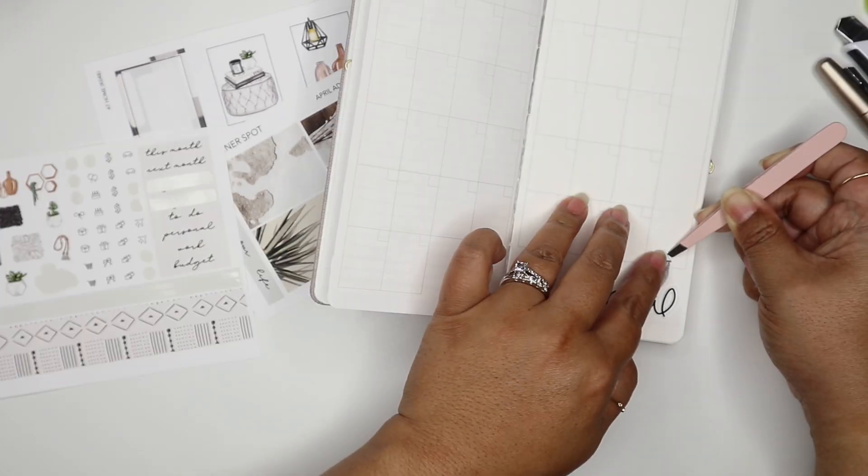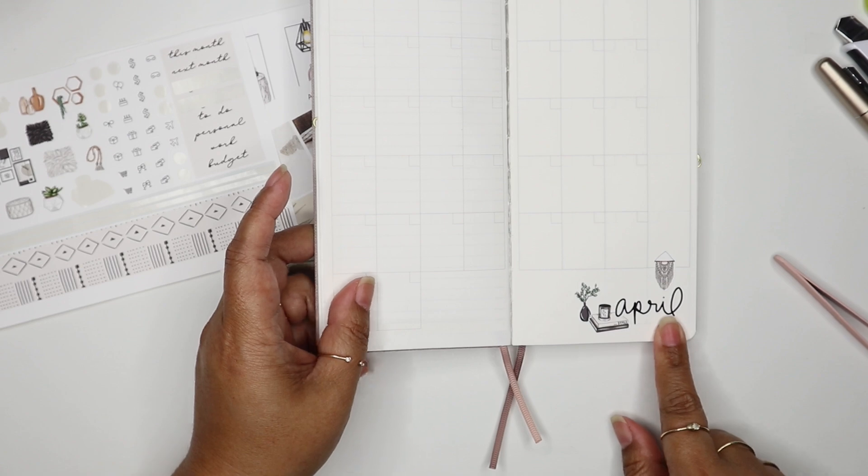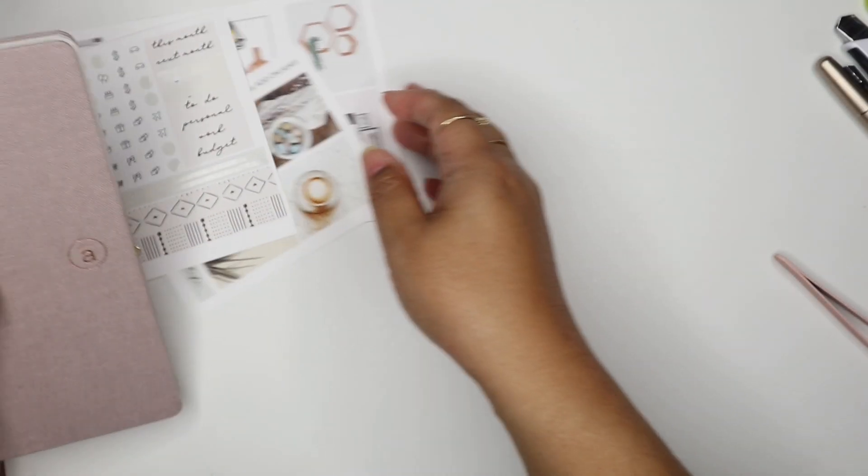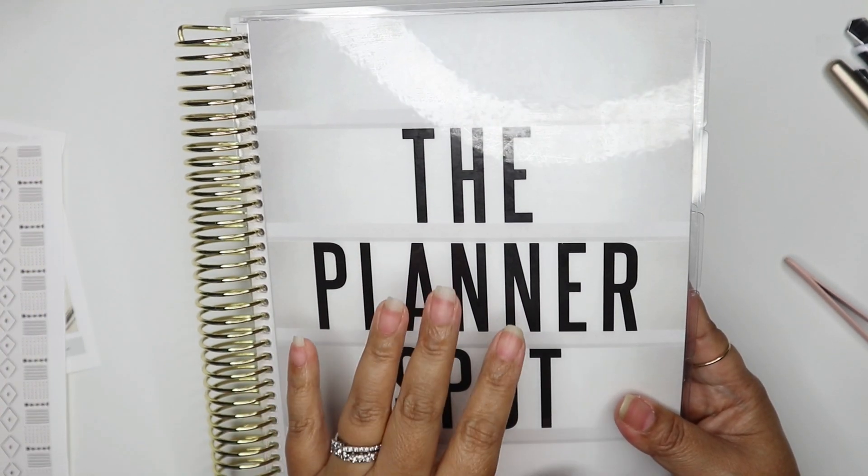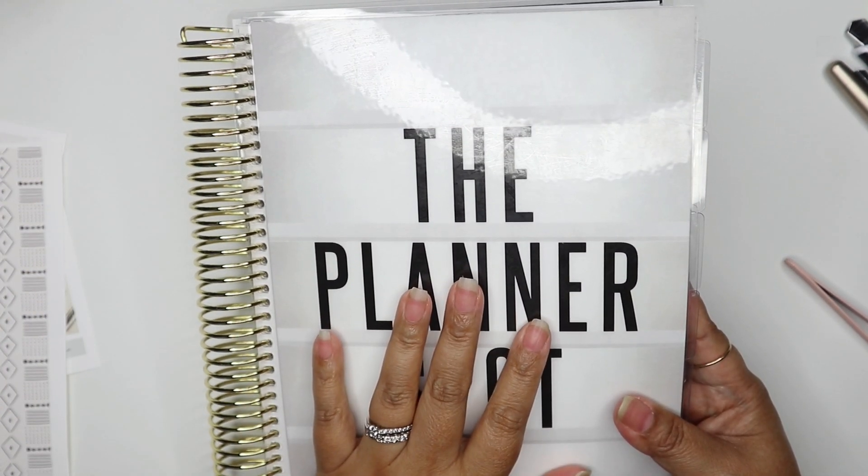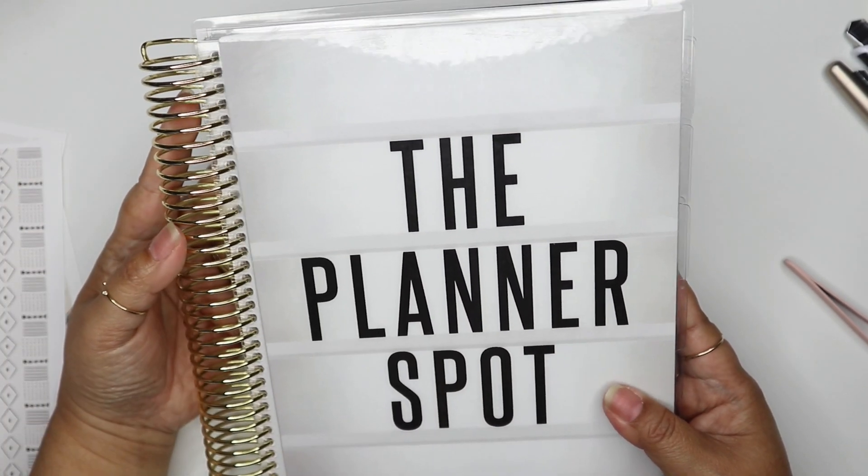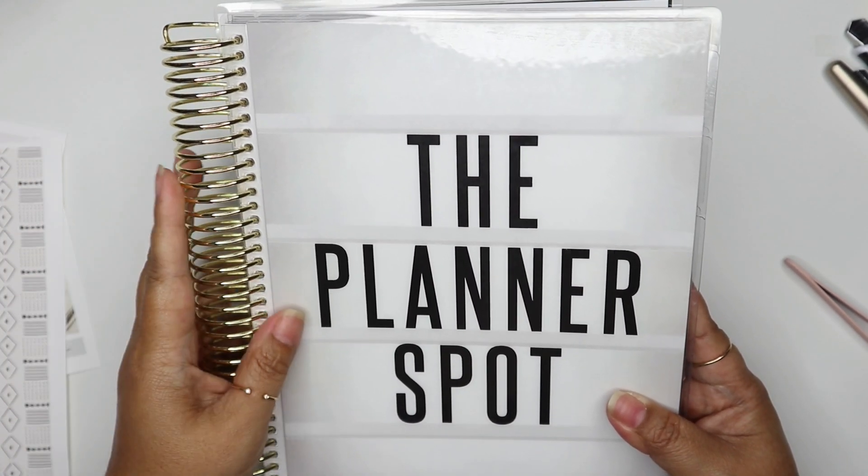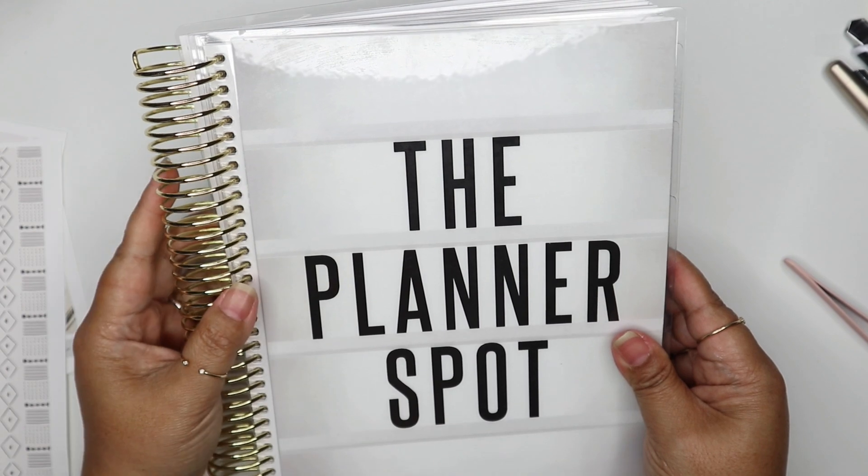That's what I do here in my memory keeper. I also wanted to show you guys one last thing, what I do in here to set up for the month. This is my Print Pression spiral planner. I've always wanted to use a spiral planner.